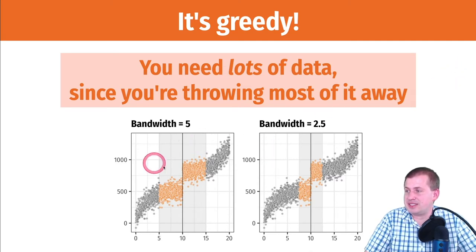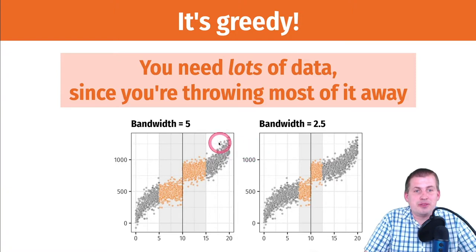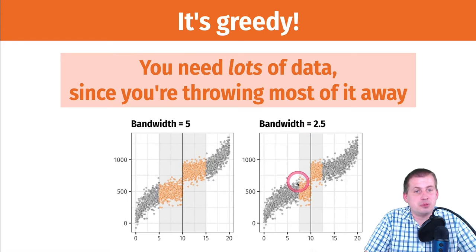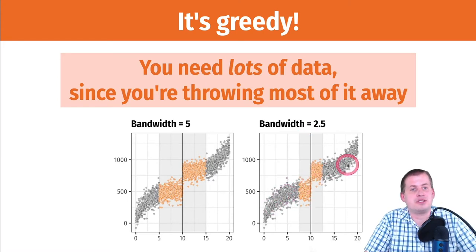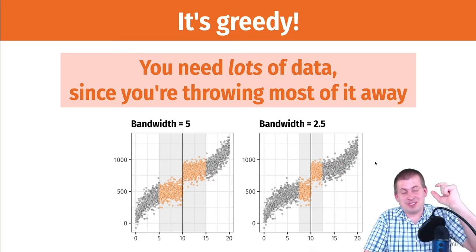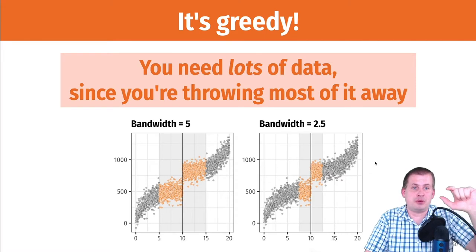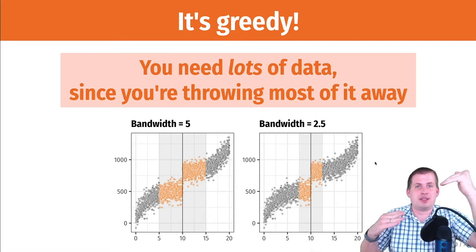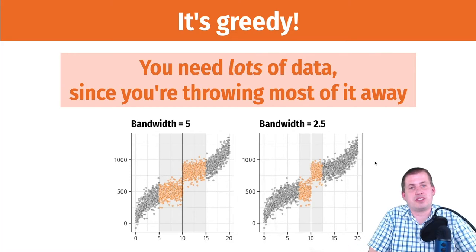If you look at this again, from the previous section showing different bandwidths — if you have a bandwidth of five, you're throwing away like half your data. If you have a bandwidth of 2.5, you're only keeping these orange points and throwing all the other stuff away. And so if you don't have a ton of observations and you're throwing like 80% of them away, that's going to be really hard to measure any statistically significant gap between the lines on either side of that cut point. It's going to be hard to measure any causal effect. So you need a lot of data for this.